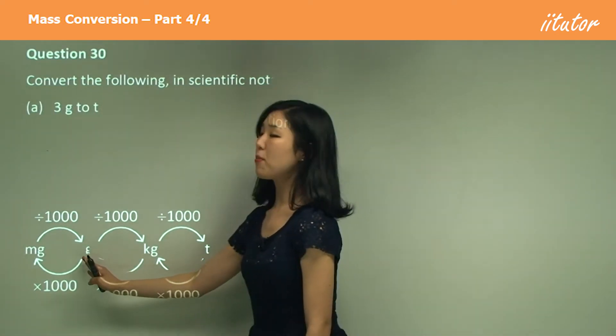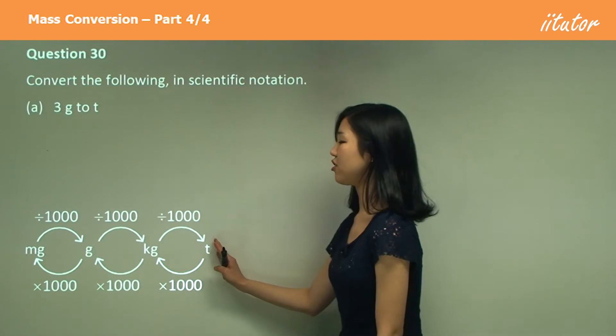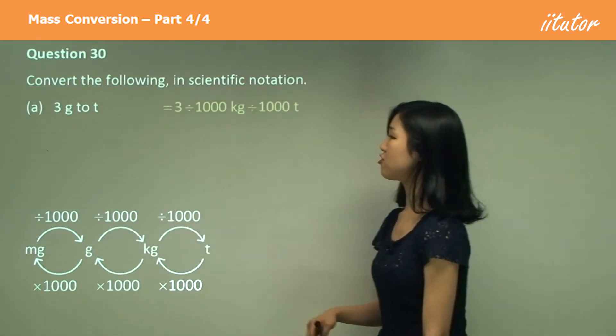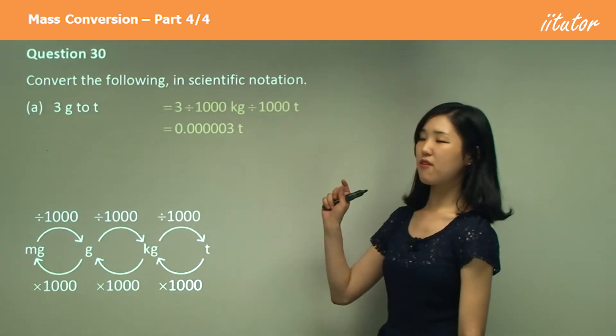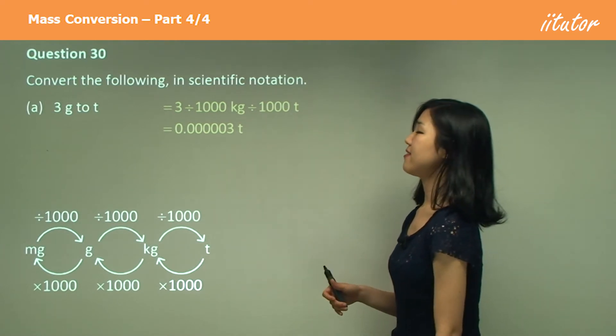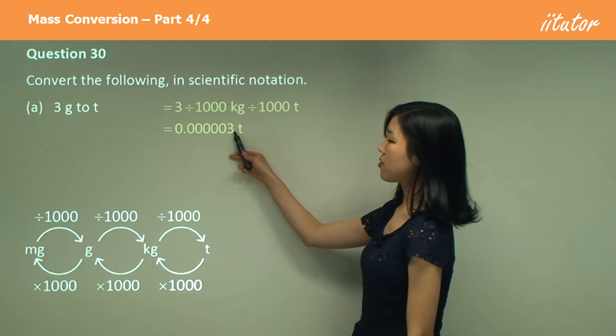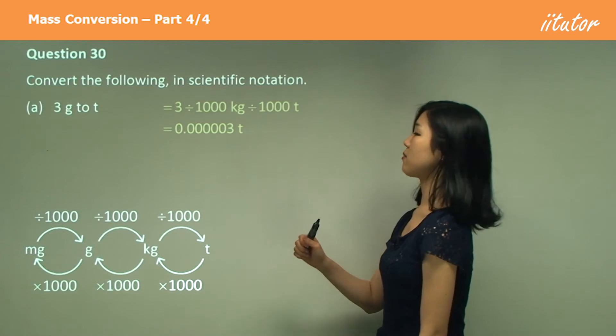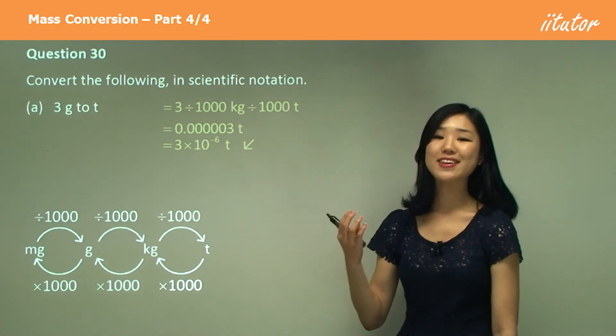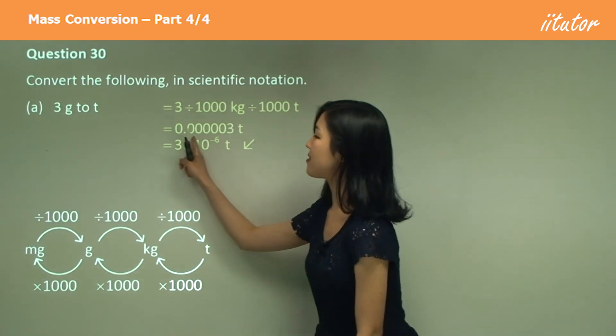Grams to tons, so this time it's the opposite way, smaller to larger unit. So divide by thousand two times, which means you're going to get a very small number. And in scientific notation, I'm going to put the decimal after the three, so it's going to be three times ten to the power of negative six, because we need to go back six places.